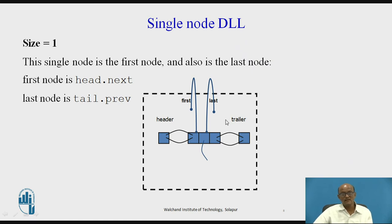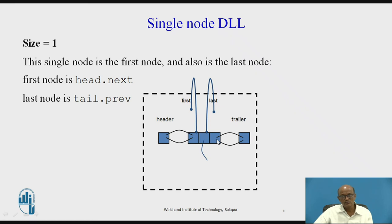A single node in a doubly linked list: the size equals one. The diagram shows that the header and trailer are present, and in between we have one node. In that node, the middle part stores the data element, the left pointer stores the address of the header, and the right pointer stores the address of the trailer. The single node is both the first node — called head.next — and the last node — called tail.previous.